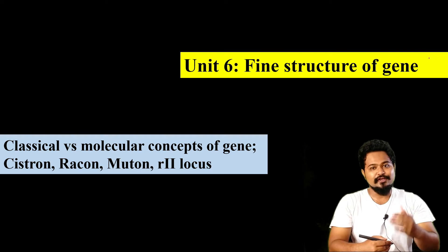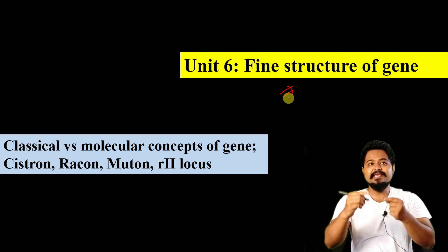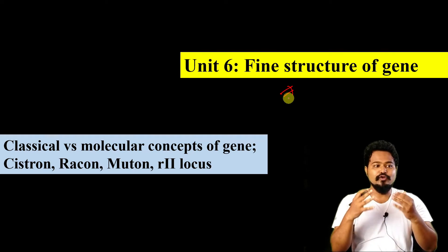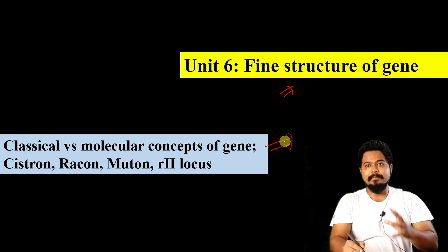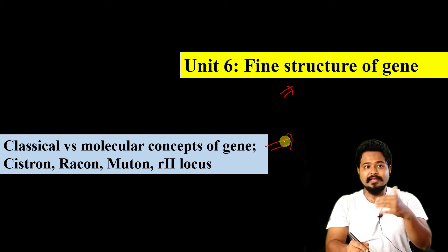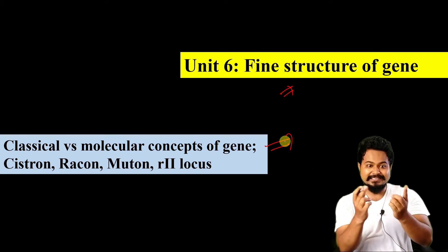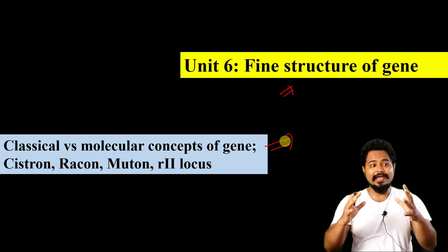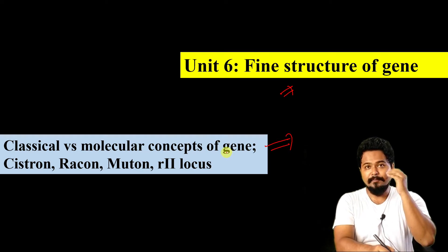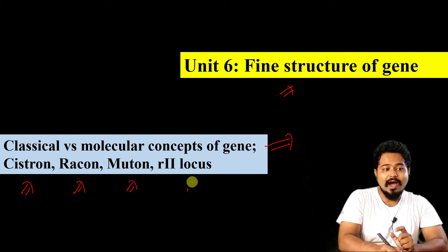Today I am going to start Unit 6 on the fine structure of the gene. We will look at the parts of the gene. These are: the Cistron, Recon, Muton, and R2 Locus.